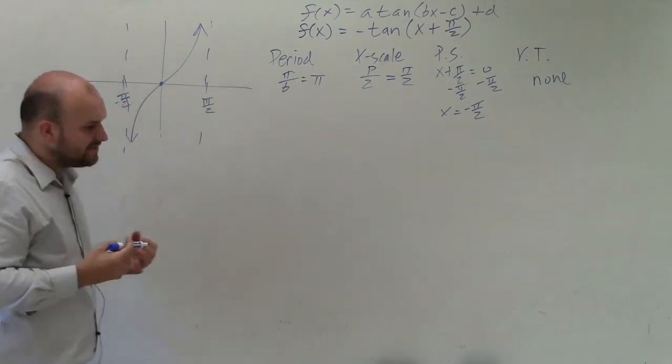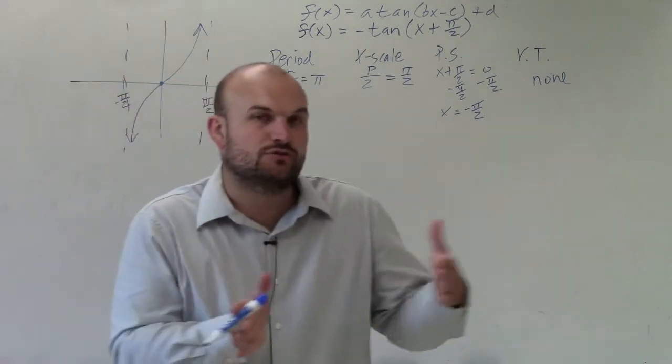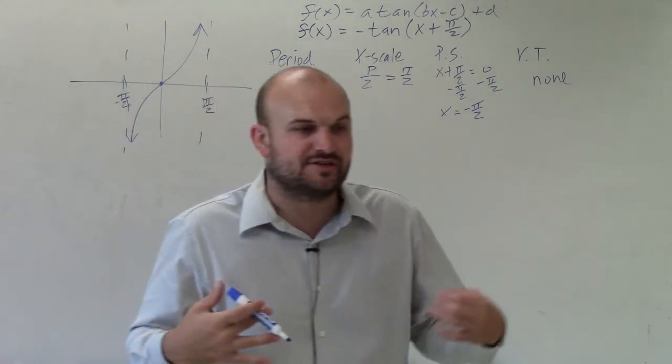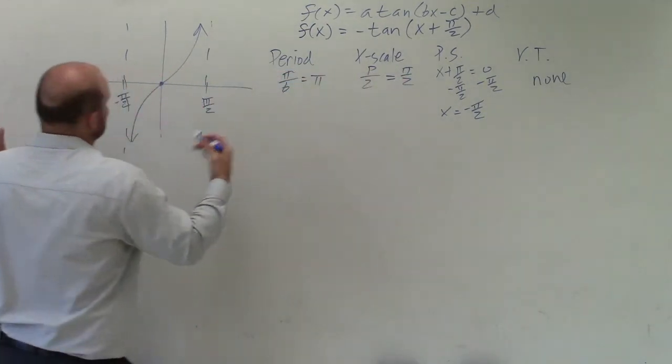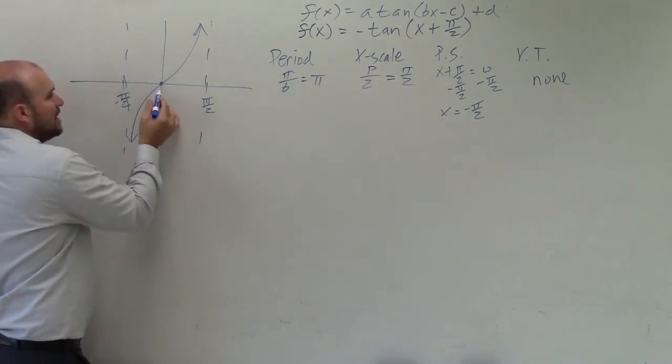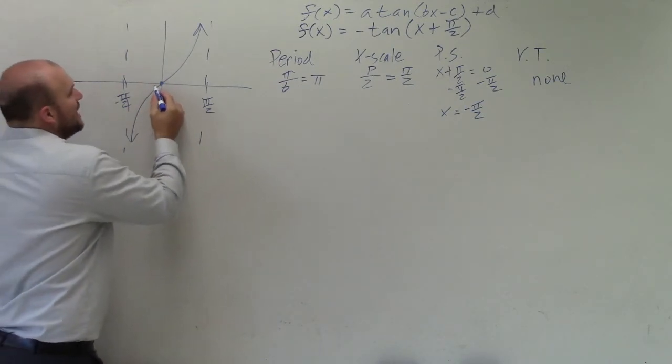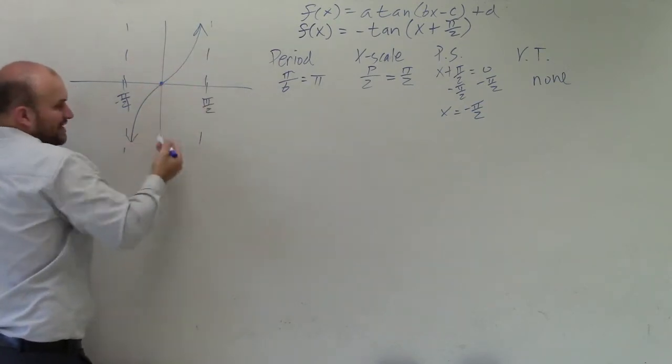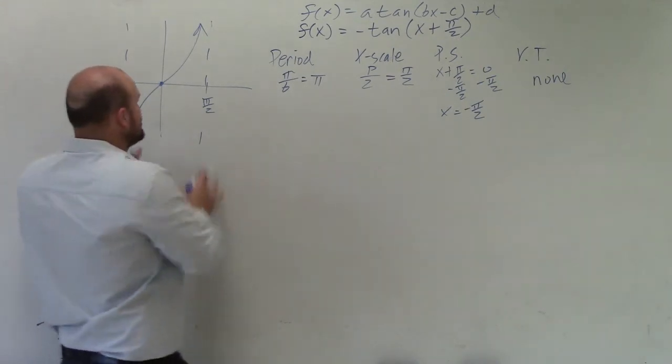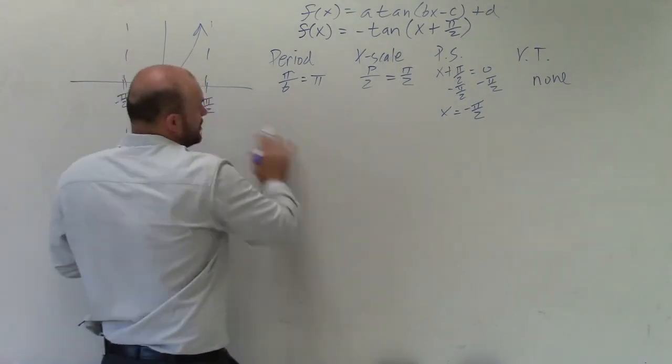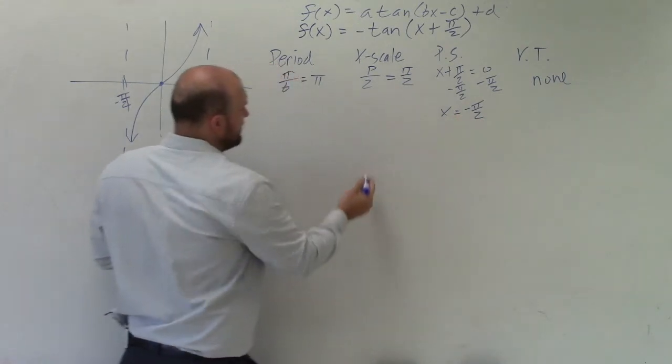The phase shift is kind of giving you where this graph is going to shift. And a lot of times, I like to use the phase shift as my starting point. The parent graph, a lot of times we start at 0 as our initial point. And therefore, we know what to do at 0 for each trigonometric graph. So what I'm going to do is start this graph instead of at 0, but at its phase shift of negative pi over 2.